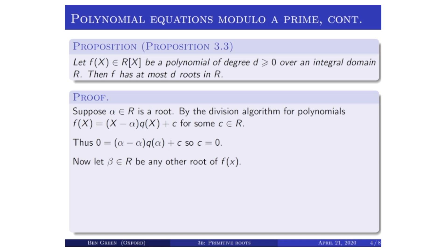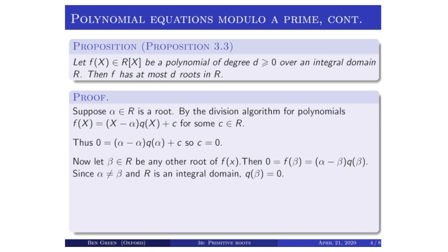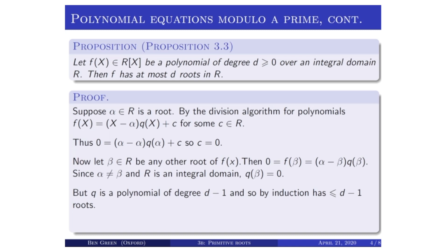Now take another root beta of f. Substituting: f of beta equals zero, and f of beta also equals beta minus alpha times q of beta. But if beta really is another root — if alpha and beta are distinct — then alpha minus beta is not zero, and therefore q of beta must be zero. This is the point at which I've used the fact that R is an integral domain. Now I can proceed by induction on the degree: q is a polynomial of degree d minus one, and so by induction has at most d minus one roots. The roots of f are the roots of q together with alpha, giving at most d distinct roots. By induction on the degree, the proposition is proved.